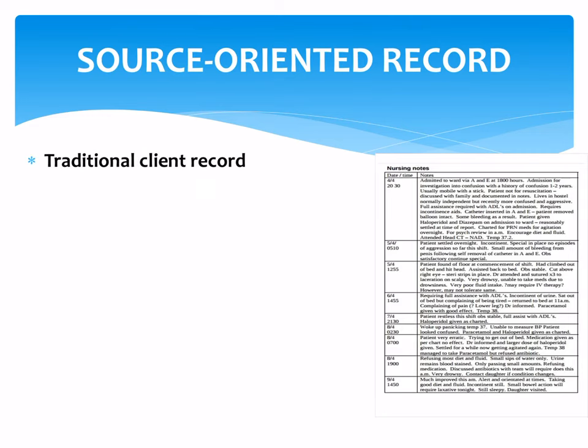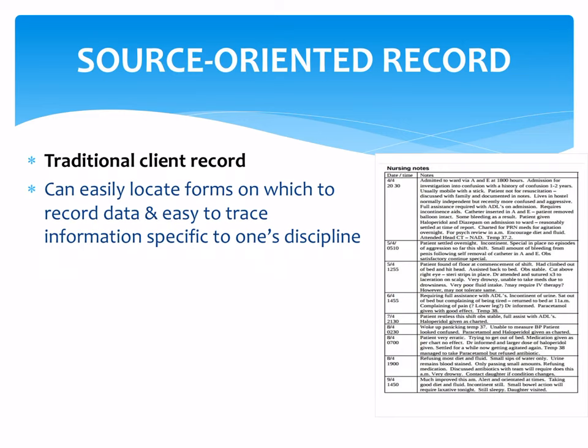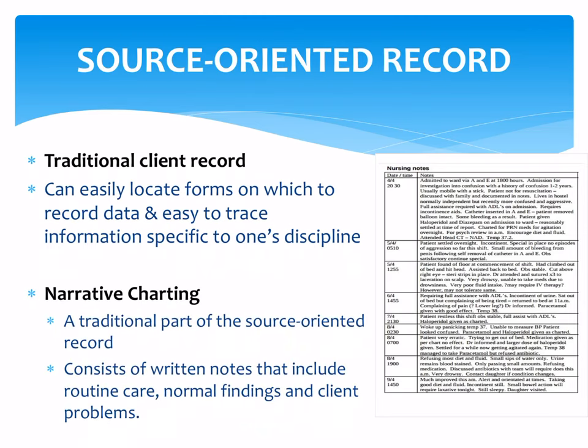The first is the source-oriented record, which includes the traditional client record. It allows you to easily locate forms on which to record data and makes it easy to trace information specific to one's discipline. For example, there is a particular sheet for vital signs monitoring only, and a separate form for intake and output. If you are a nurse receiving the patient, you just locate the form and find the data there.